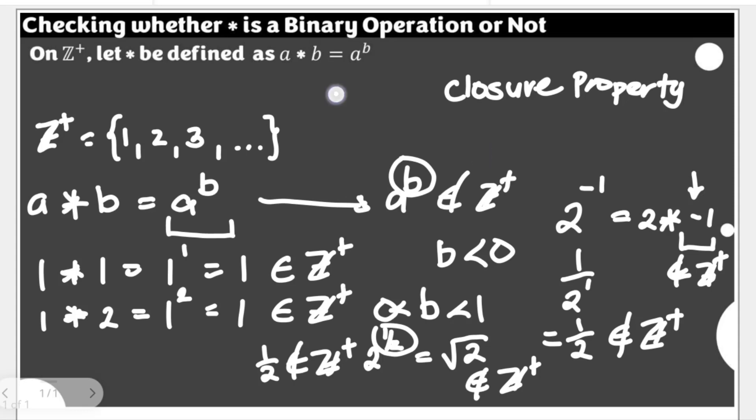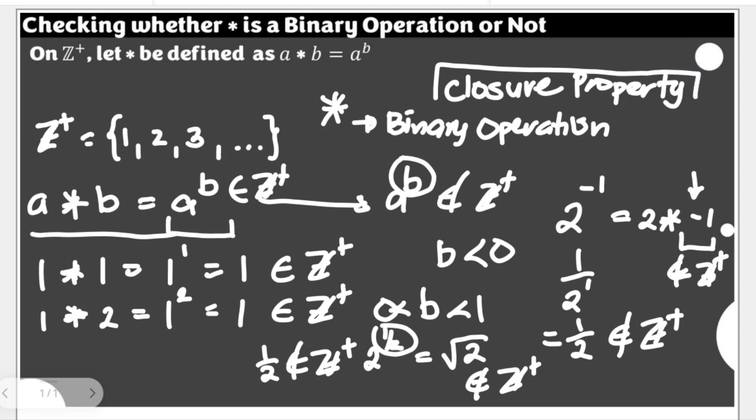So, what can we say about the operation star in this given definition? Because it is safe to say that for all elements in our Z+, and it will be defined using this operation, all of the results a to the power of b are elements of Z+, and hence we have established the closure property. This is an indication that our star here is a binary operation under the same set.